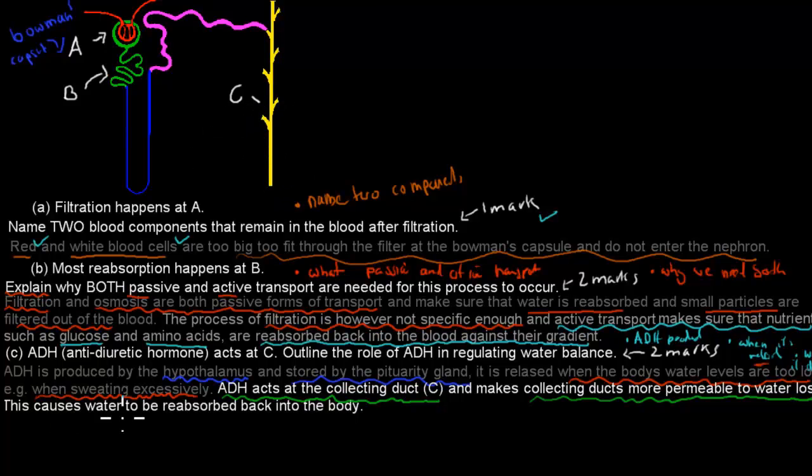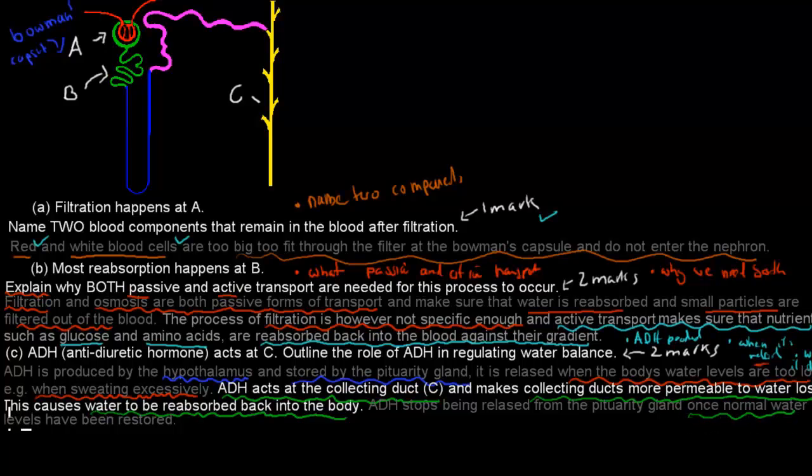If it were to stay in the collecting ducts, it would be removed in the urine. And this causes water to be reabsorbed back into the body. So this prevents further water loss. That's what ADH does. And using words like permeable, this is good because it's scientific words that make the whole answer seem more scientific.